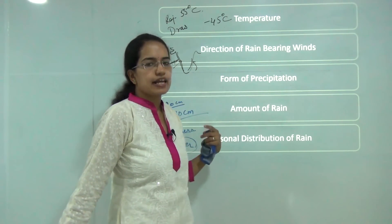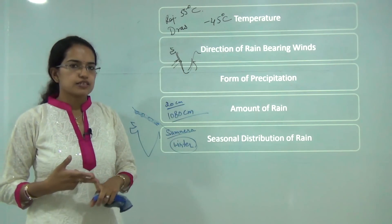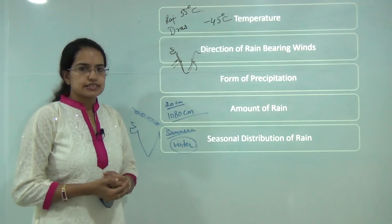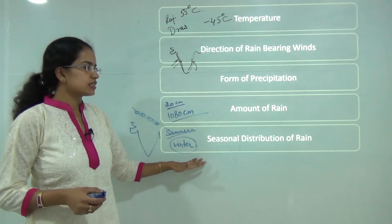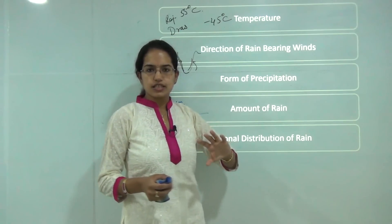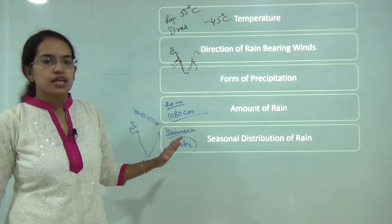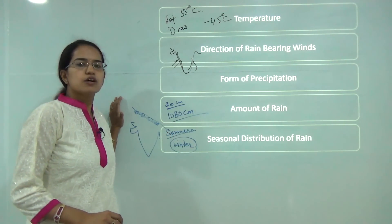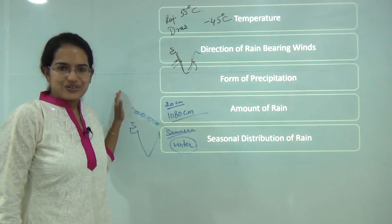This was the basic idea behind the Indian monsoon. We have talked about the various factors, theories, phenomena, and characteristics of Indian monsoon. Further sessions on climatology will cover various terminology, pressure belts, and wind belts in detail. Subscribe to the videos for further updates on climatology. Have a good day ahead.